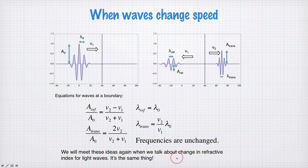So I'll meet these ideas again when we talk about change in refractive index for light waves. It's the same equations for light, obviously, and when light goes from air to glass, it changes velocity, and this tells you how light behaves at an interface. It becomes a little more complicated when we have angles involved as well because we can have light coming in and leaving at different angles.